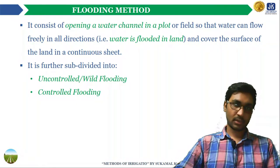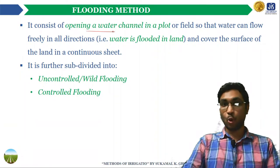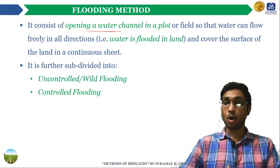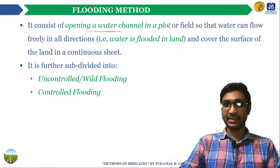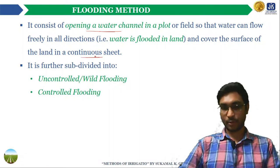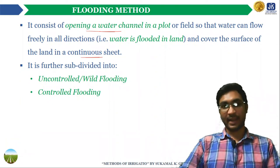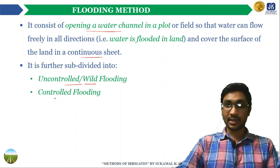The flooding method consists of opening a water channel in a plot or field so that water can flow freely in all directions. This flooding method covers the surface of the land in a continuous sheet. The flooding method can be subdivided into uncontrolled flooding, also known as wild flooding, and controlled flooding.